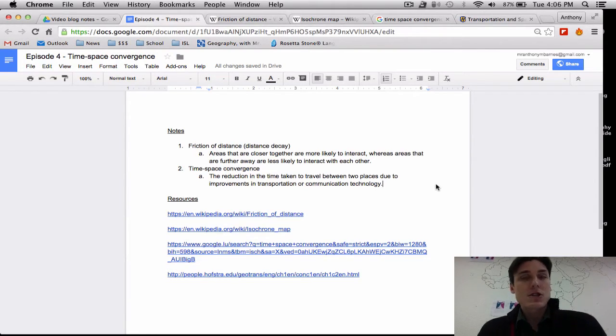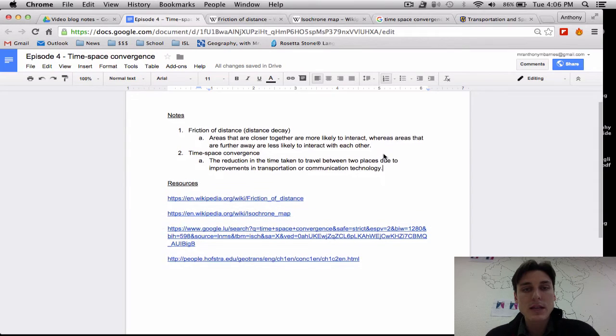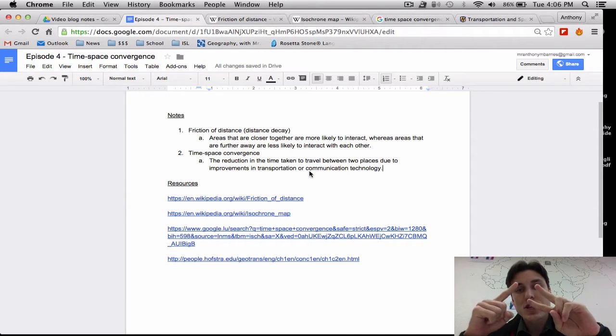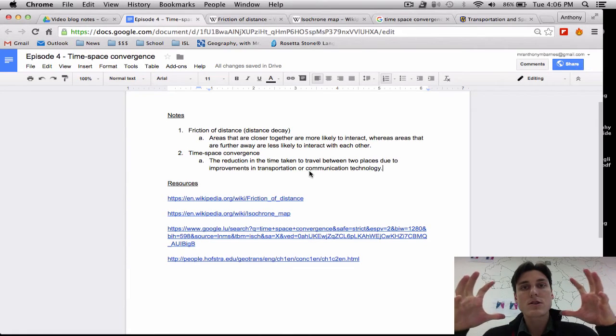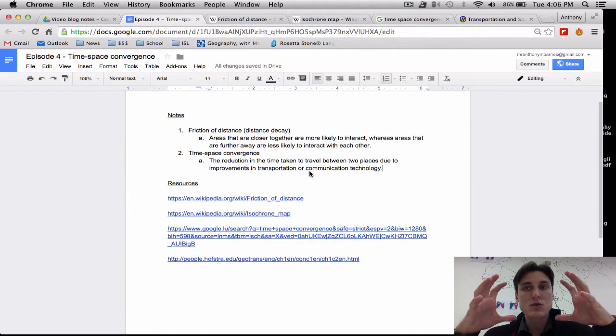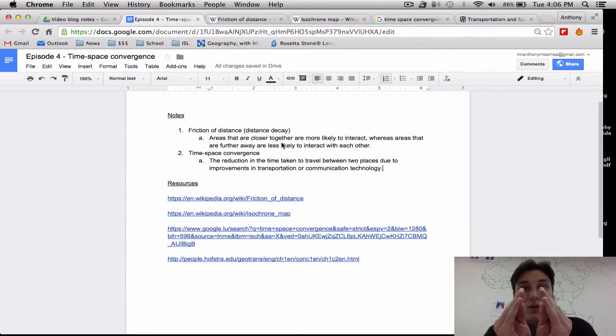So that essentially is distance decay. The closer you are to something, the more likely you are to interact with it. How does that relate to globalization? Well, what's happened is, as a result of two major things, if you look at the time-space convergence definition down here, changes in transport and changes in communication have brought us closer together because we can now communicate and get to places much easier. The world is shrinking, we say, as a result of that. The time that it takes to get to a place has shrunk, which has caused places to feel closer together.